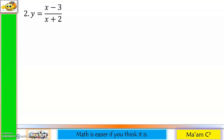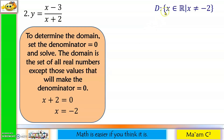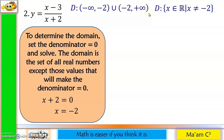Next: y = (x − 3) / (x + 2). For the domain, set the denominator equal to 0: x + 2 = 0, so x = −2. Negative 2 is the number that makes the denominator equal to 0, so we exclude it. Domain in set builder form: x ∈ ℝ such that x ≠ −2. In interval notation: (−∞, −2) ∪ (−2, +∞).